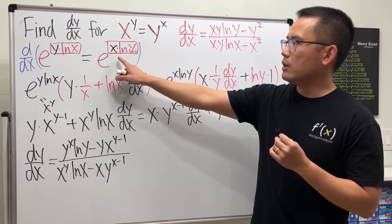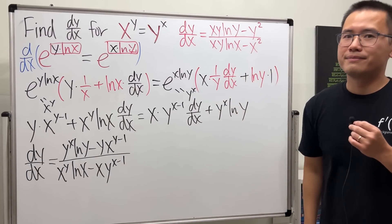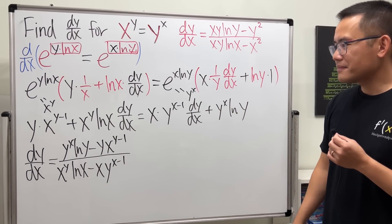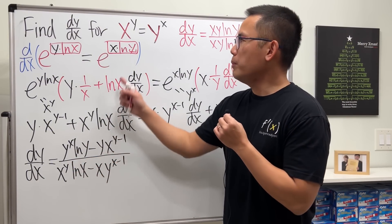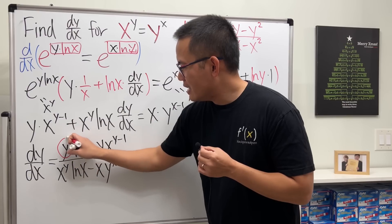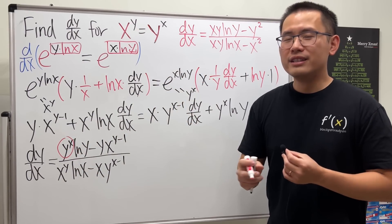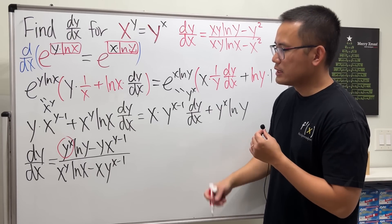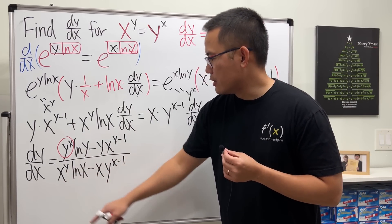So how is this the same as the original answer? Here's the thing: when you do implicit differentiation, go back to the original equation — y to the x is the same as x to the y, so we can simply replace one with the other. That's how you can further simplify.